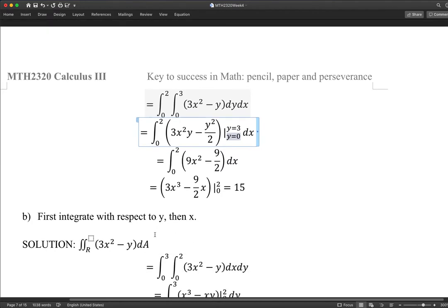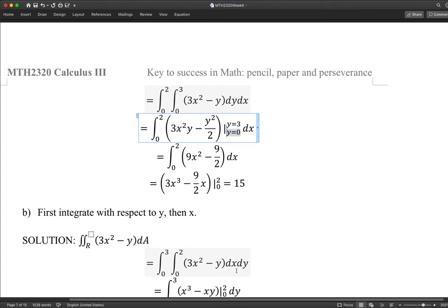The second part, part b, this is the way I just did it. It's pretty much the same problem. I'm doing this time integration in terms of x first. Accordingly, you want to change the integral sign. x is changing from 0 to 2, then y is changing from 0 to 3.